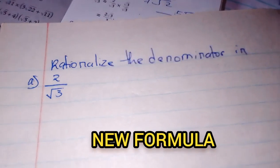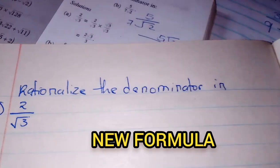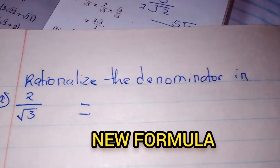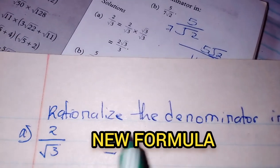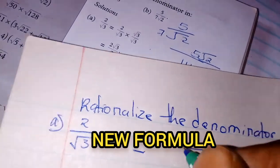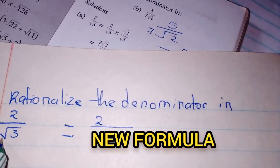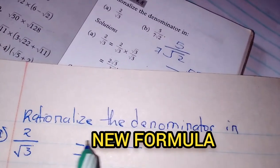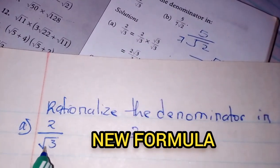Rationalize the denominator in problem A as you see there. Now, the solution is here. You just want to go straight to the answer. The main aim of rationalizing is to remove the root sign at the bottom. You bring it at the top. You write the first one as you see, bring this at the top.